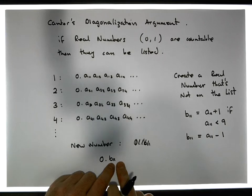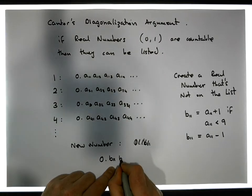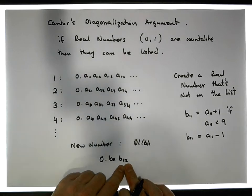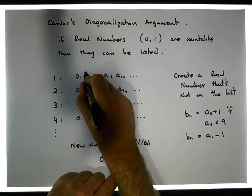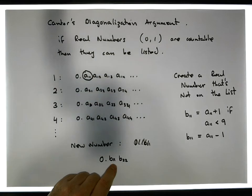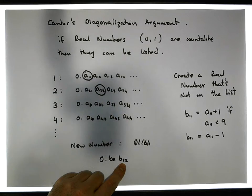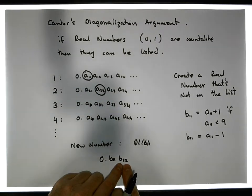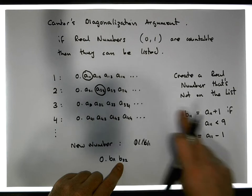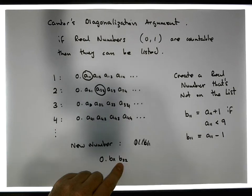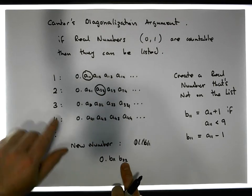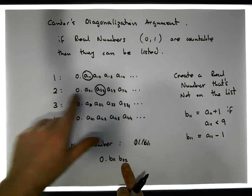Now, what about the second digit in this number? Let's call this B22. B22 is going to be based off the second digit in the second real number. Once again, what I'm going to do is either add one onto this digit to create this new digit, if the current digit is less than nine. Otherwise, I'll subtract one. So now I know that the second digit in this number is different to the second digit in the second real number.